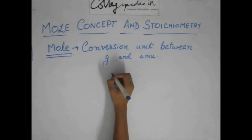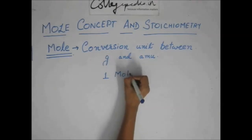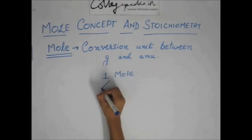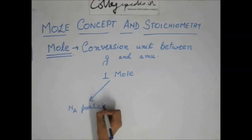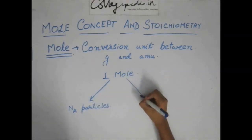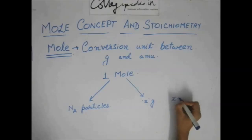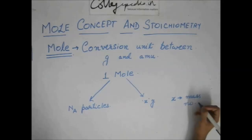This will make it more clear. One mole is equal to Na, that is Avogadro number, that is 6.022. So, this mole is equal to Na particles and this one mole is also equal to x gram where x is the mass number of that element.